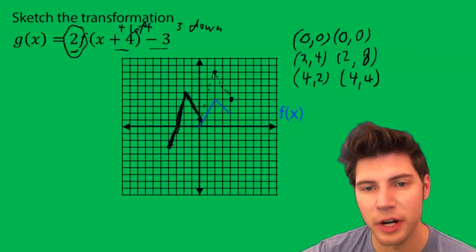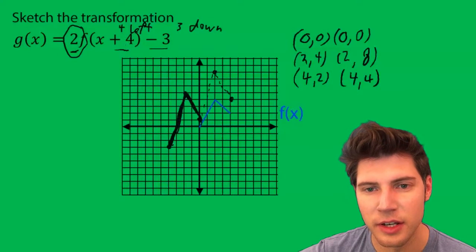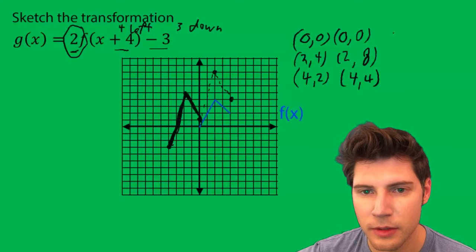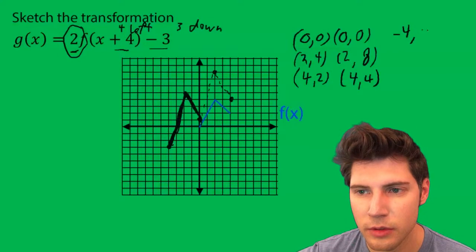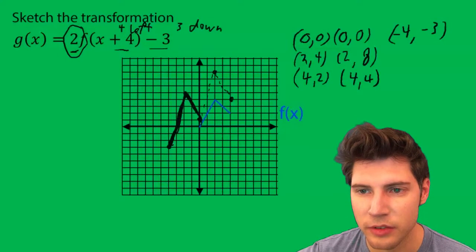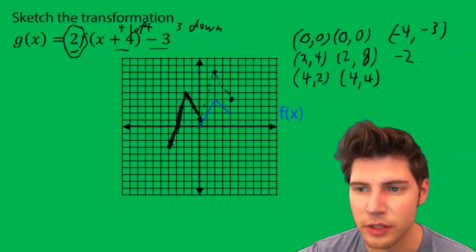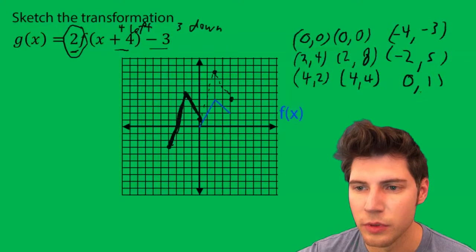So we're going to subtract 4 from all the x's, and subtract 3 from all the y's. So it's minus 4, minus 3. Minus 4 gives us negative 2, minus 3 gives us 5, and minus 4 gives us 0, and minus 3 gives us 1.